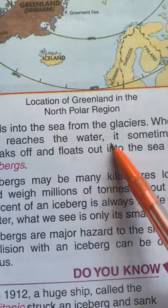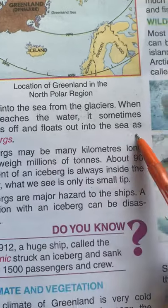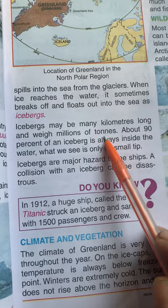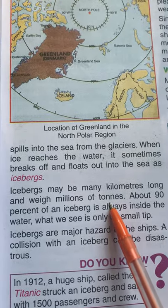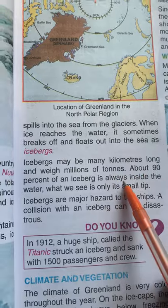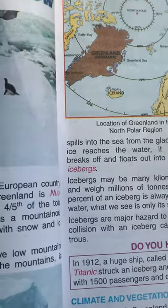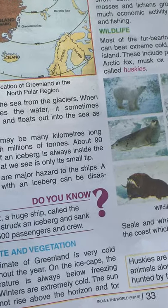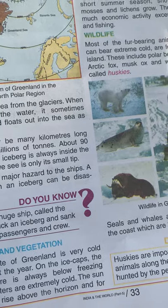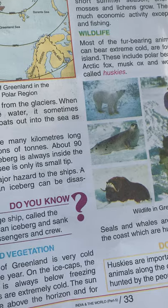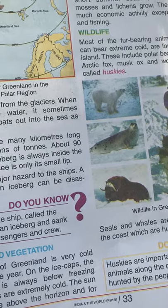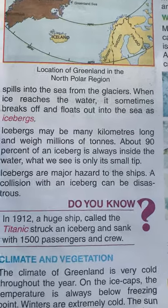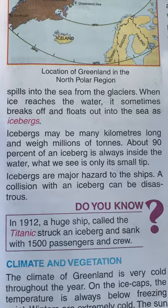When ice reaches the water, it sometimes breaks off and floats out into the sea as icebergs. Icebergs may be many kilometers long and weigh millions of tons. Most of the portion of the iceberg is under the water and not visible — only the tip is visible. They are so extremely heavy and big that they sink inside the water, and this makes them very dangerous for ships.